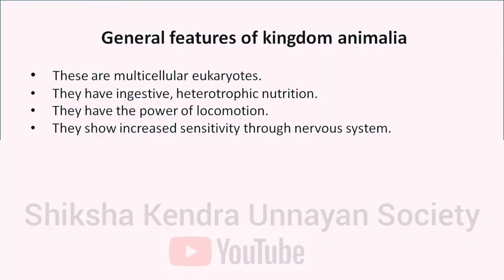These are multicellular eukaryotes — that is, they contain a nucleus and organelles and are enclosed by a plasma membrane. They have ingestive, heterotrophic nutrition, meaning the process of absorbing nutrients. They have the power of locomotion and they show increased sensitivity through nervous systems.